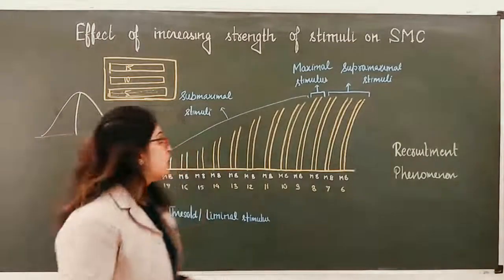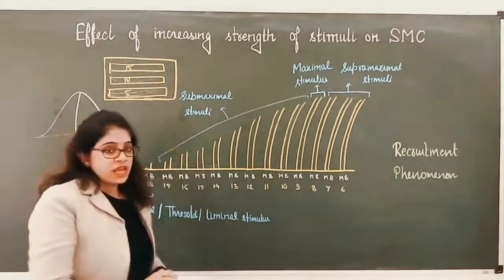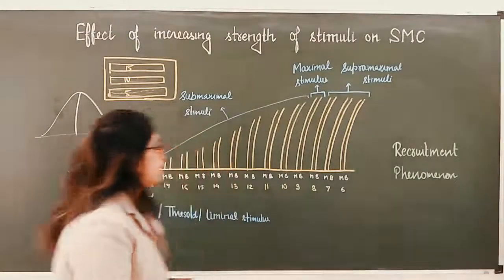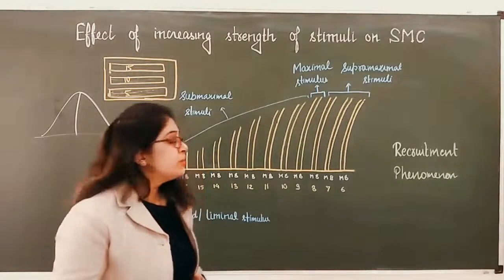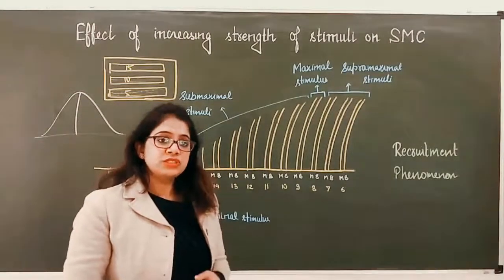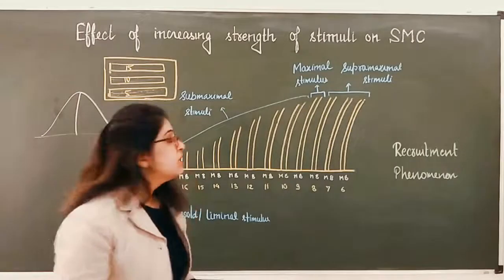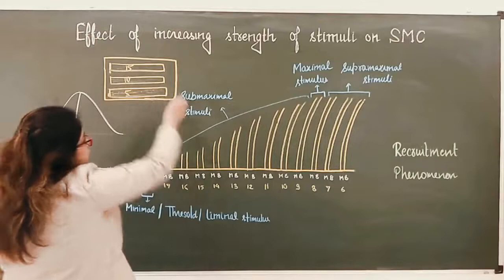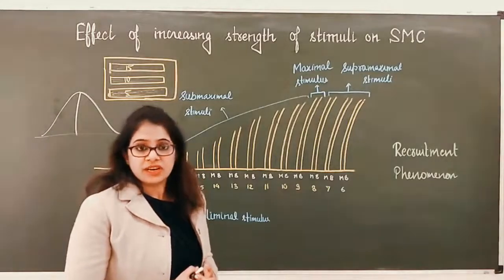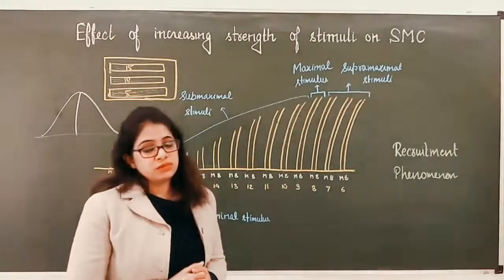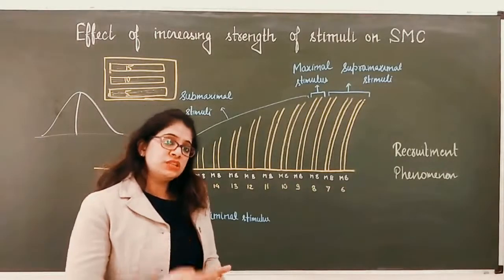If we give a stimulus of ten millivolts, this motor unit and another motor unit will come into picture because the stimulus crosses the threshold of these two motor units, and the contraction of the muscle will be a little stronger. If we give a stimulus of twelve millivolts, there will be no change in the force of contraction, because the same two motor units are contracting. But if I give a stimulus of fifteen millivolts, all three motor units will come into picture as the stimulus has crossed the threshold of all three, and the muscle will contract to its maximum. Again at twenty millivolts there is no further change because all three motor units are already recruited.